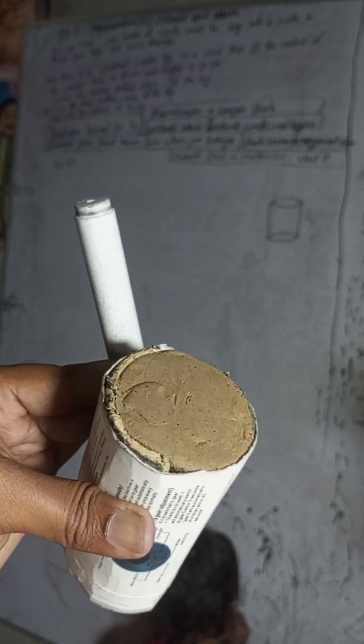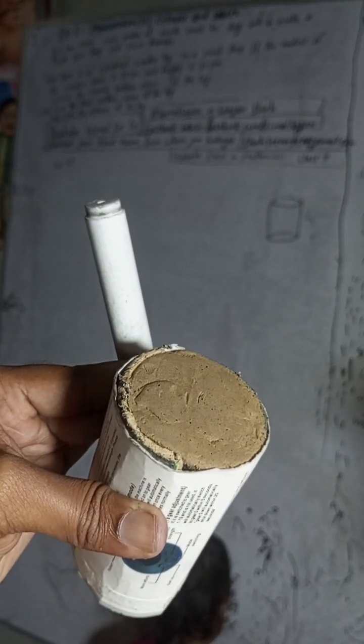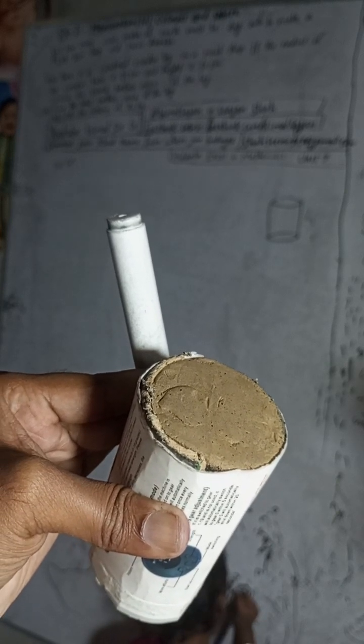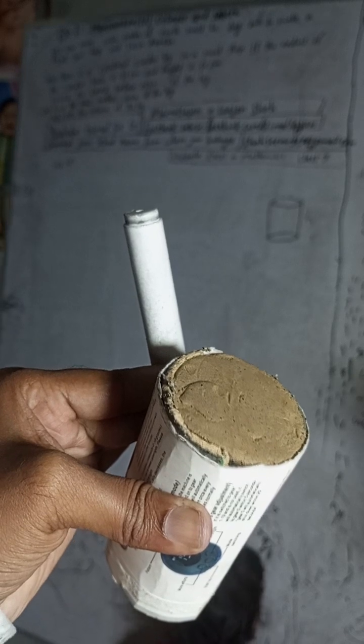Hi class 9 and 10 students, welcome back to Bimal Sarji YouTube channel. This is question number 5C, exercise 7.1, mensuration third part: cylinder and sphere.